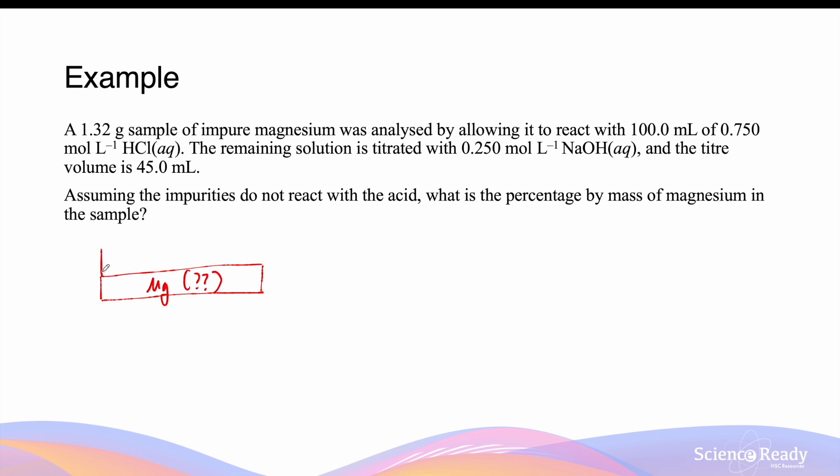We are adding an excess amount of hydrochloric acid. To be exact, this will be 0.1 L times 0.75 mol per liter of hydrochloric acid. And the remaining amount, that is the titrant, is titrated with sodium hydroxide. The amount of sodium hydroxide that was required was 0.25 mol per liter multiplied by 0.045 L.